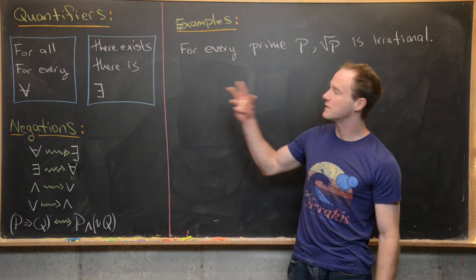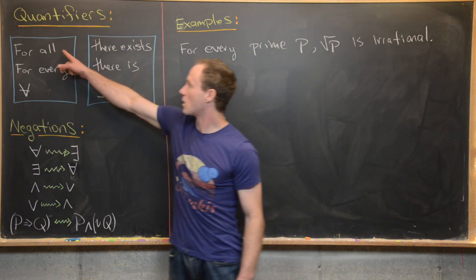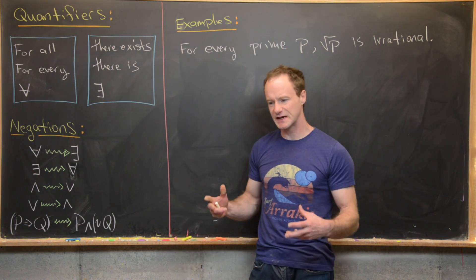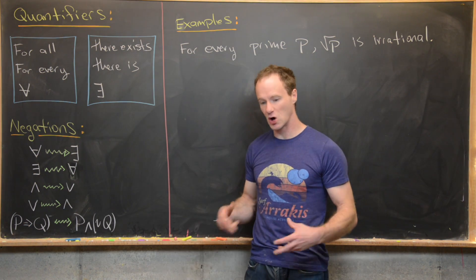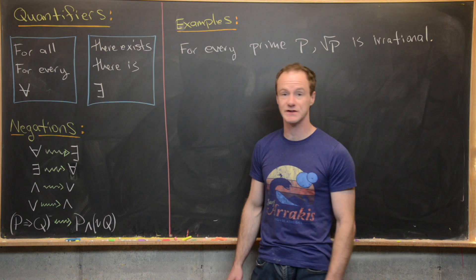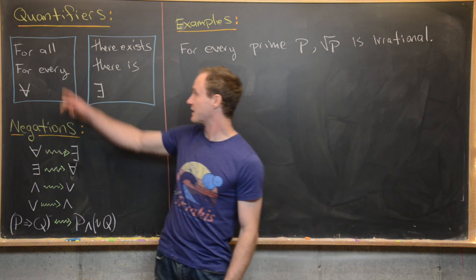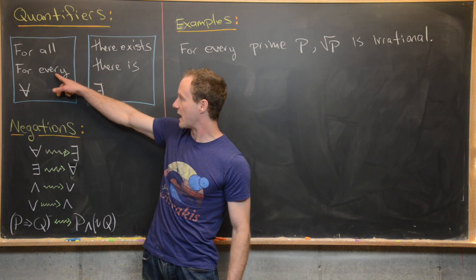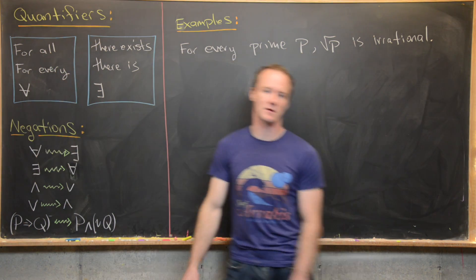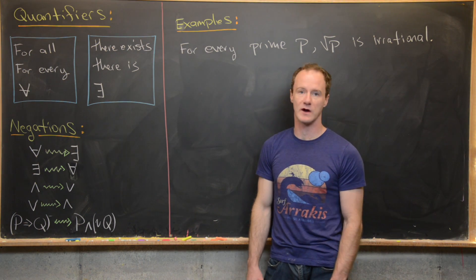There are two main quantifiers. There is the for all quantifier, which means something is true for all elements of a given set or things that have a certain property. Generally that's written as 'for all,' 'for every,' or this symbol right here, which is read either 'for all' or 'for every.'